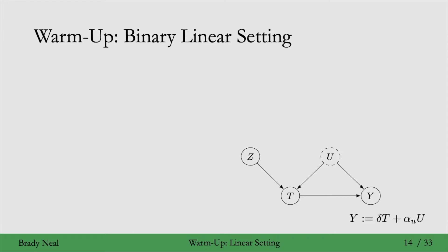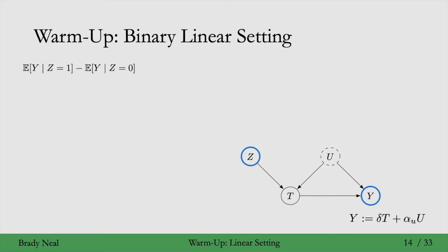We'll start in the setting where z and t are binary. Because our goal is to identify the causal effect of t on y, and because we know that the instrument z is supposed to be useful somehow, we'll start with this quantity: the expected value of y given z equals 1 minus the expected value of y given z equals 0. So we're starting with this associational difference, and we're going to use it to show that we can identify the causal effect of t on y, which in this case is just delta — the scalar in front of t in the linear structural equation that generates y. You can see that structural equation in the bottom right corner of the screen. The very first thing we're going to do is plug that structural equation in for y.